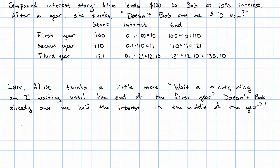So now Alice is thinking, in the first year, Bob starts out owing her $100. And then half of the interest, so $5 in interest, has already accumulated by the middle of the year. By the middle of the first year, Bob owes Alice $105.